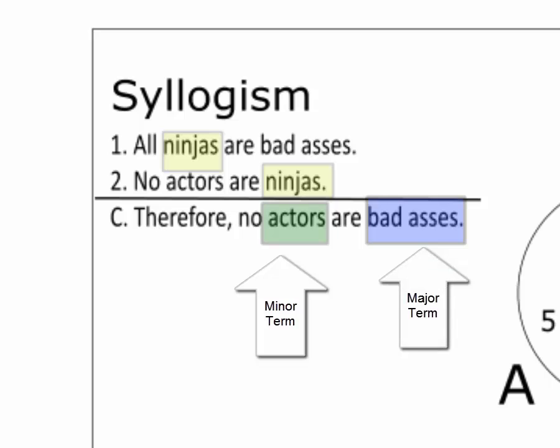We call the premise containing the major term the major premise, and the one containing the minor term is the minor premise. To handle a categorical syllogism, we need a Venn diagram for three sets, as there are three terms.